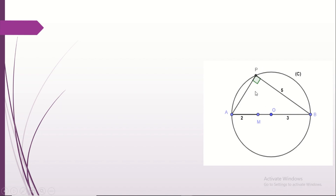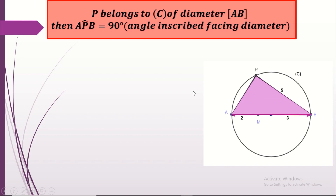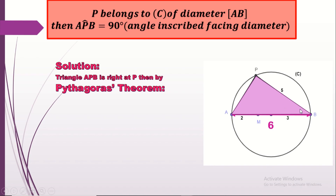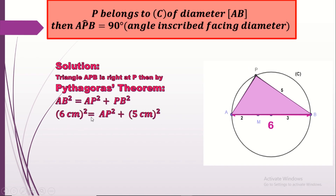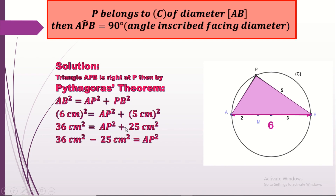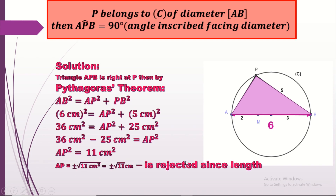Applying the Pythagorean theorem in right triangle APB: AB² = AP² + PB². AB = 2 × radius = 6 cm. So 6² = AP² + 5², giving 36 = AP² + 25. Therefore AP² = 11, and since length is positive, AP = √11 cm.